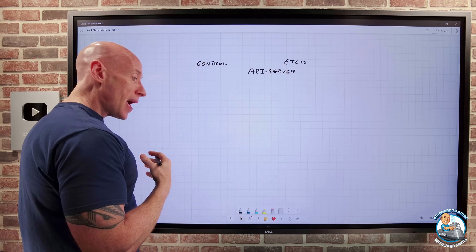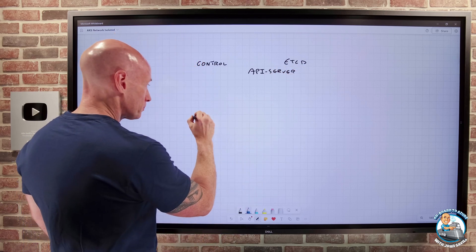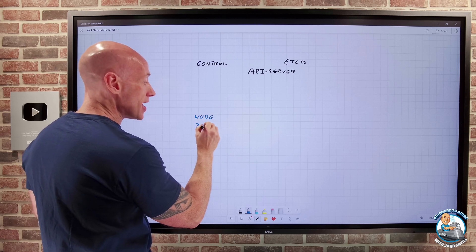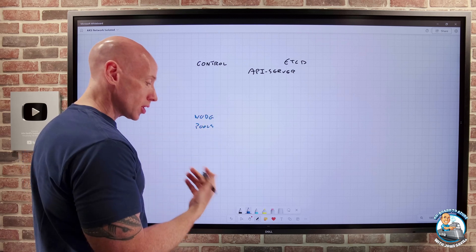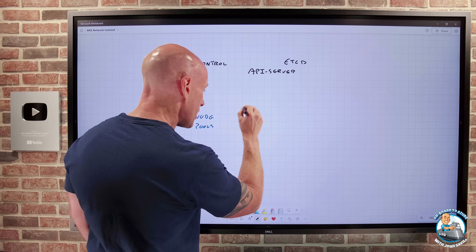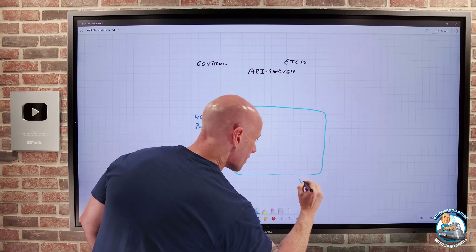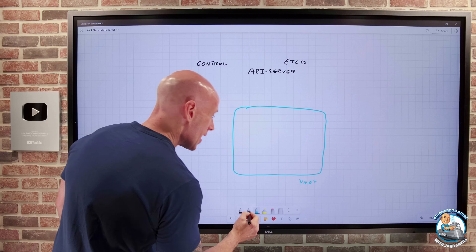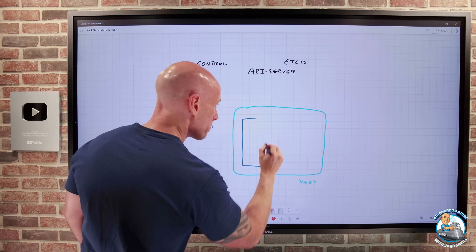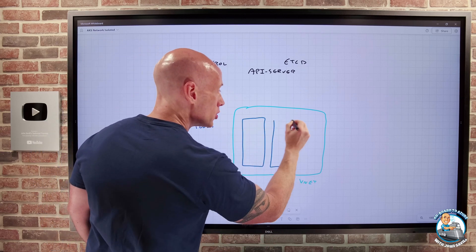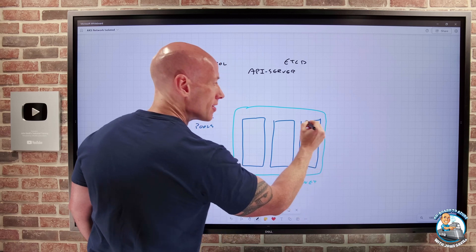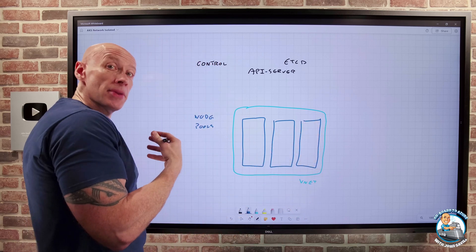And then you have the node pools. Now the node pools, they live in the customer subscription. Those nodes live in the customer virtual network. So I've got my VNet. And then we go and create those various node pools. Now within those node pools, they're running various components, and one of them is the kubelet.